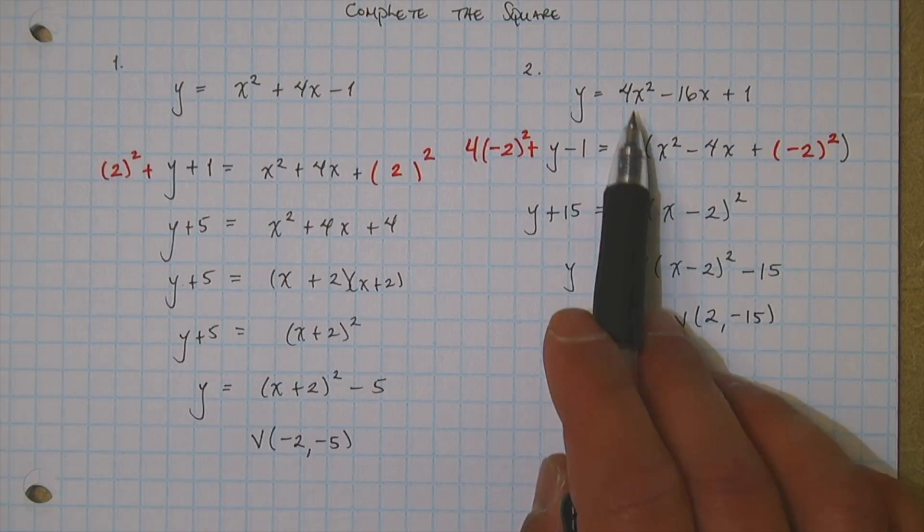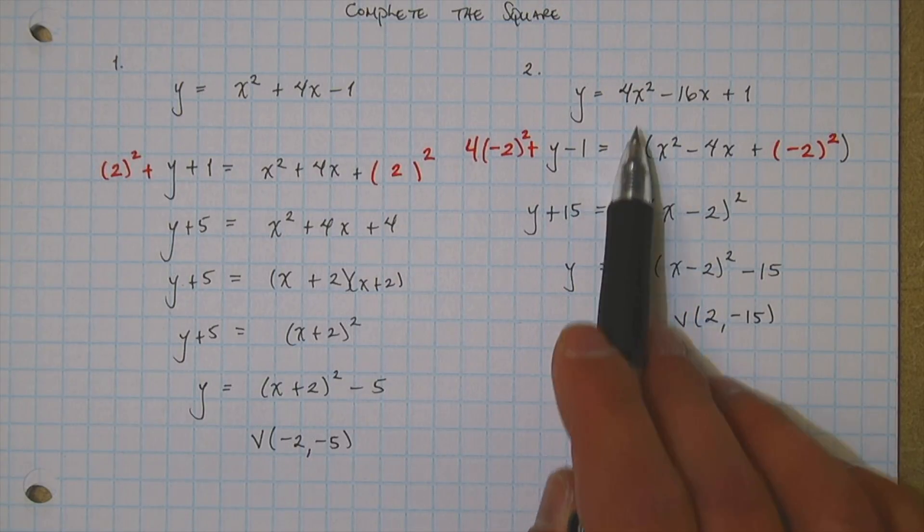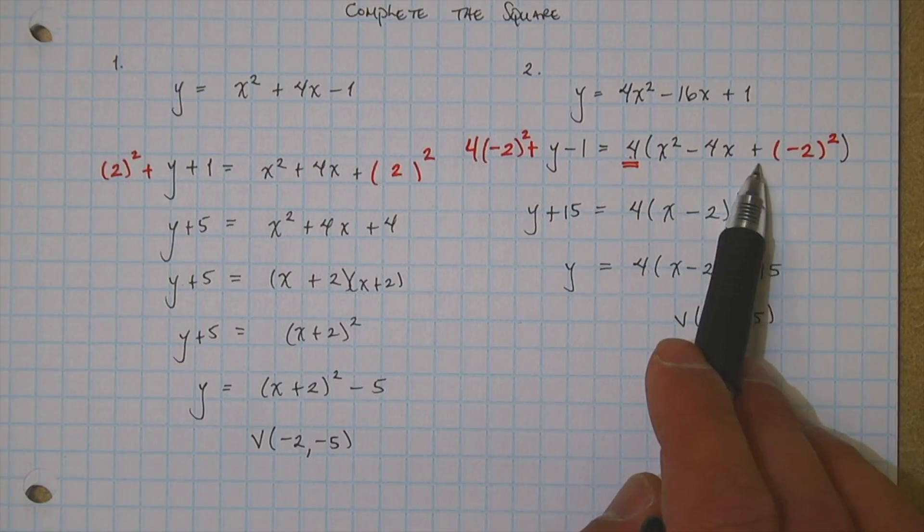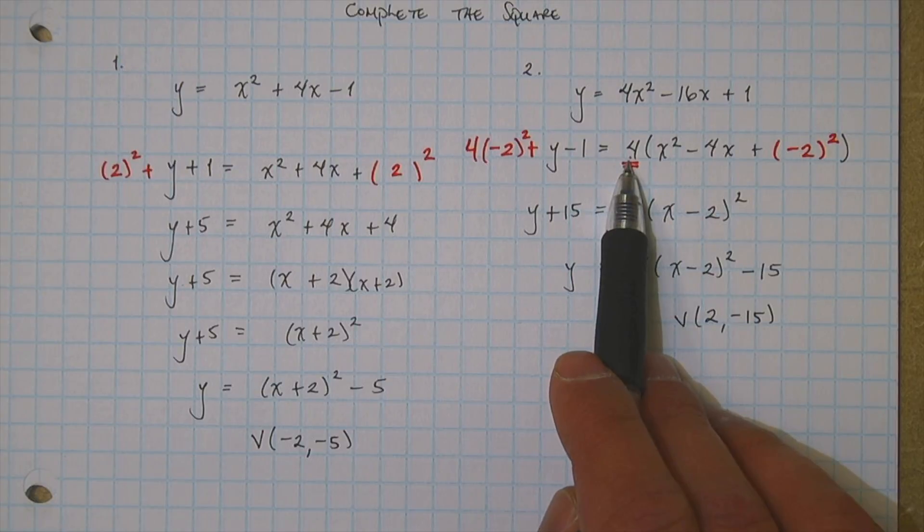So remember guys, completing the square, you can have a leading coefficient with the x squared. You have to factor it out. Whatever you add on the right, you add on the left. But make sure, remember, you have to add that multiplier. Alright guys.